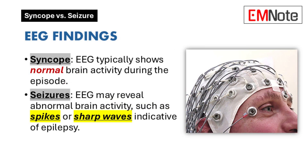Electroencephalogram Findings: An electroencephalogram, a test that measures brain electrical activity, is typically normal during a syncopal episode. In contrast, an electroencephalogram recorded during a seizure may show abnormal brain activity, such as spikes or sharp waves, which are indicative of epileptic activity.